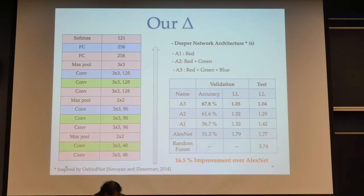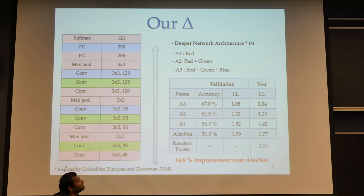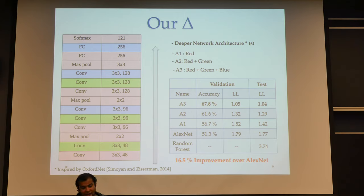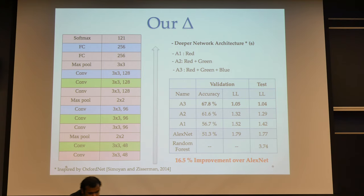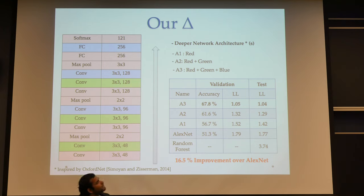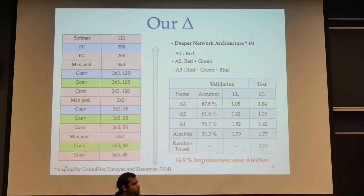We built architectures similar to OxfordNet, in three variants of increasing depth. The first architecture, A1, has four learnable layers (shown in red). A2 has seven layers (red and green). A3 has ten layers (red, green, and blue). With A3, we get a 16.5% improvement over AlexNet in terms of accuracy and approximately a four-fold improvement over the random forest baseline.